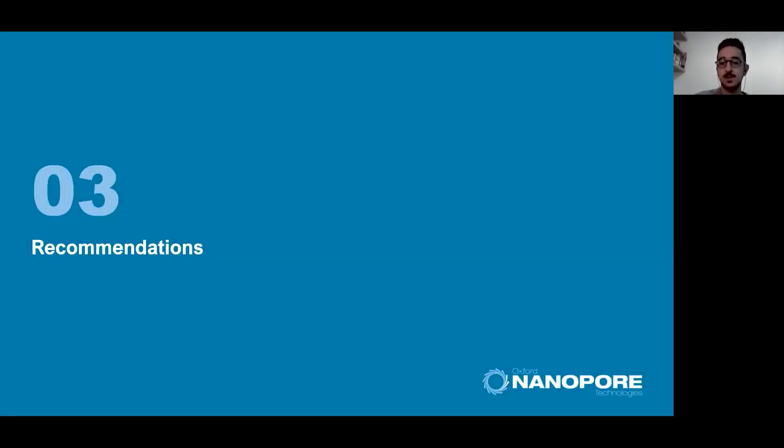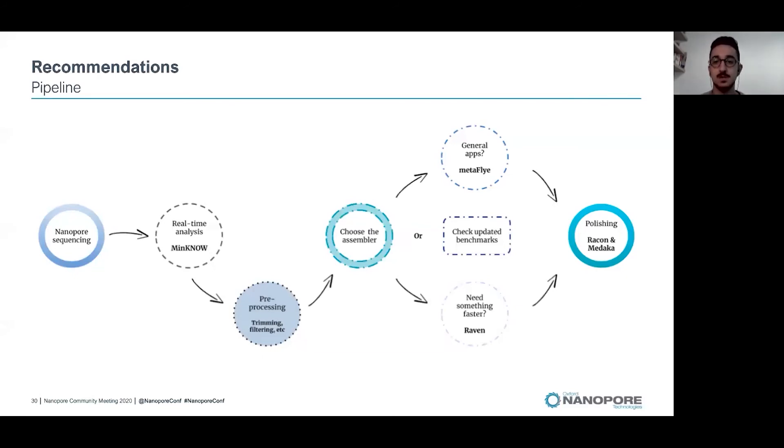I would like to finish with some personal recommendations on metagenomic assembly. This is the pipeline we are using nowadays in the lab so far, focusing on which software to choose for metagenomic assembly. I will recommend you to use MetaFlye for general application. My second option would be Raven, which is indeed faster sometimes. I will also recommend you to use Pomoxis if you don't have RAM issues. Of course, Canu also works really well, but as I mentioned before, it could not be scalable to all the datasets. I would always recommend you to check for updated benchmarks whenever you're going to perform metagenomic assembly.